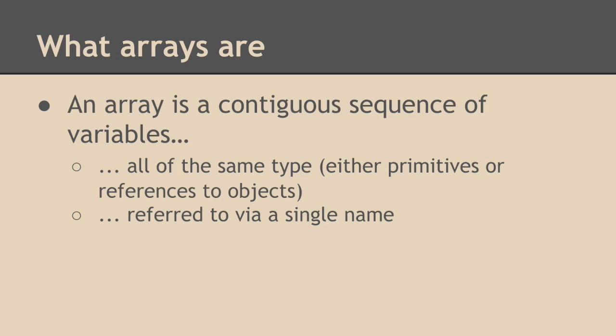And that whole collection of variables or storage locations is referred to with a single name. And then we can access any particular element in that collection or that sequence with its index number. So it's sort of a way to hold a bunch of things in a container, and we can access each of the elements in the container by some index value that tells us where it's at in the container.